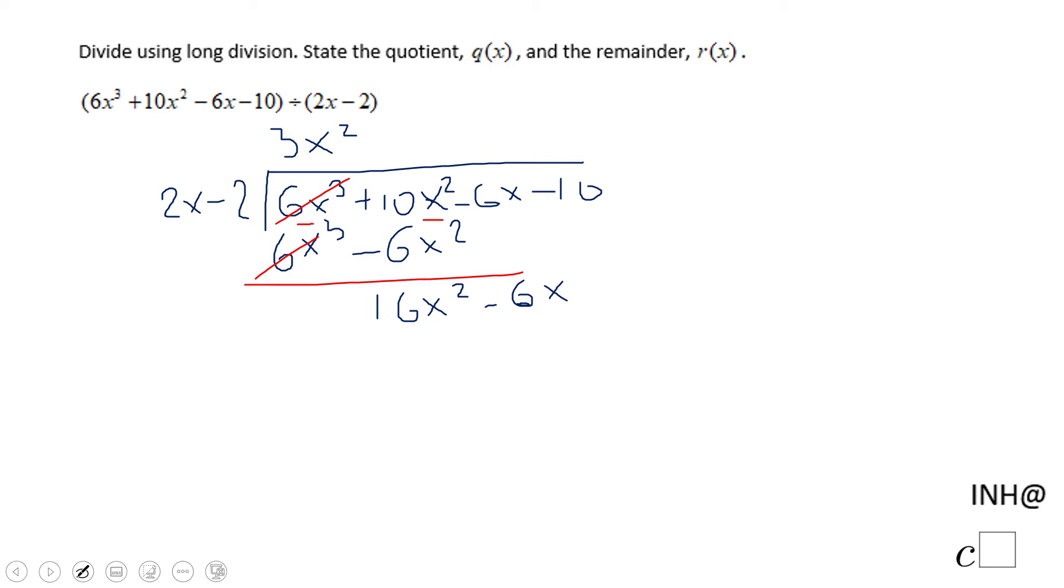Now what should I multiply 2x to get 16x²? That would be 8x. 8x times 2x is 16x². 8x times negative 2 is negative 16x. We're going to subtract.